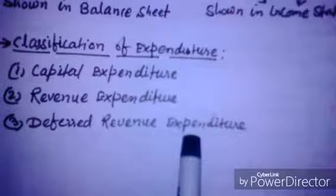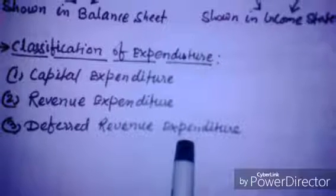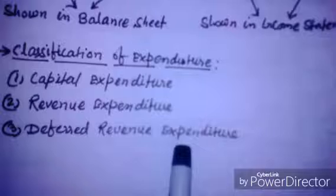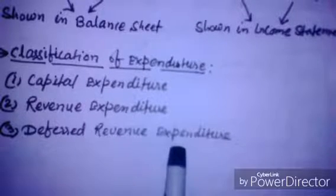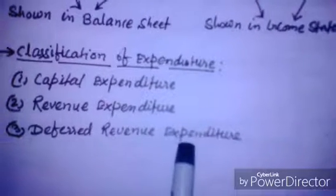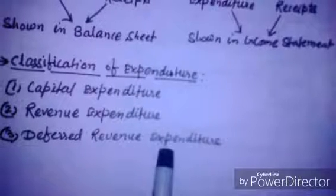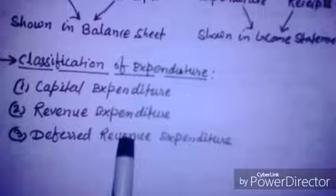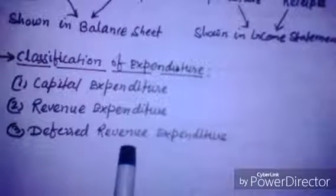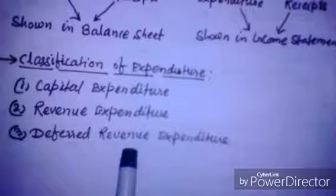The third type is deferred revenue expenditure. A heavy revenue expenditure whose benefit may extend over a number of years, and not for the current year only, is called deferred revenue expenditure. According to guidance notes on terms used in financial statements, deferred revenue expenditure is expenditure for which payment has been made or a liability incurred, but which is carried forward on the presumption that it will be of benefit over subsequent periods. Examples include: preliminary expenses, brokerage on issue of shares and debentures, discount on issue of shares and debentures, heavy amounts spent on advertisement, and research and development expenses.